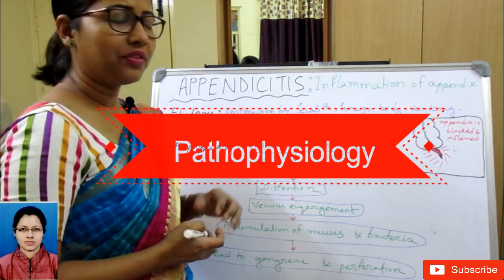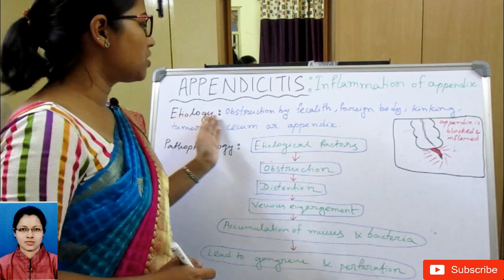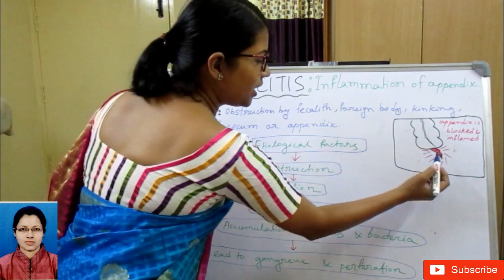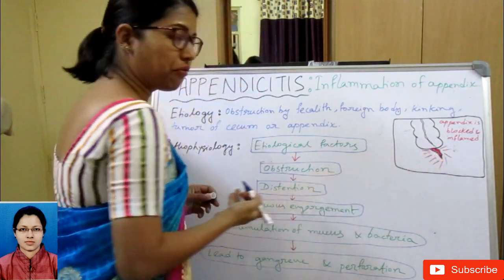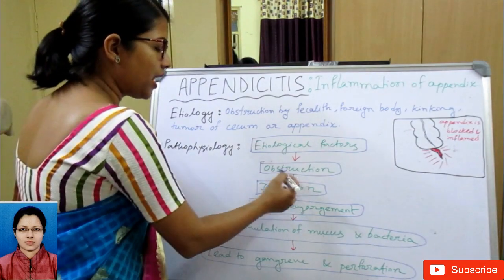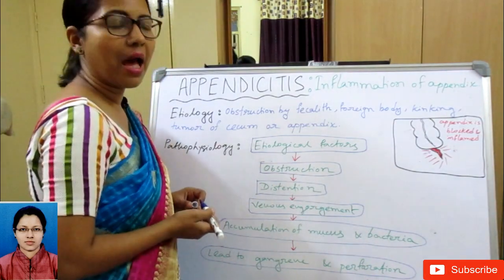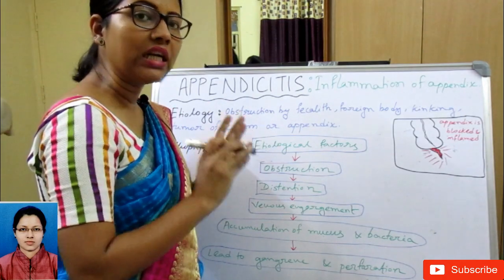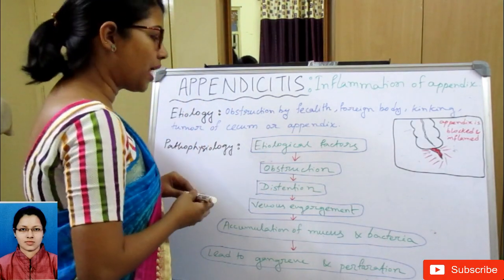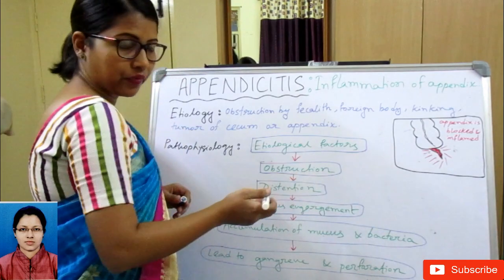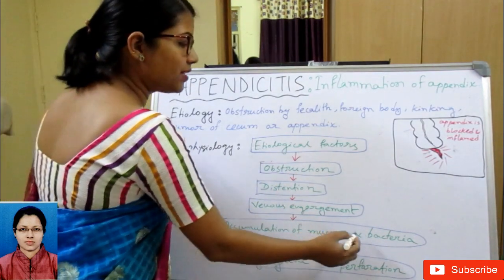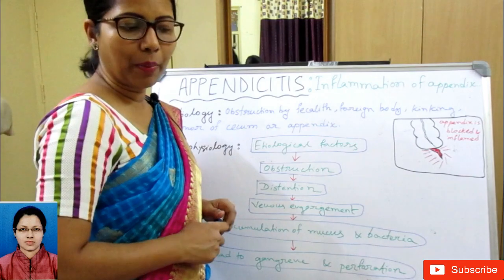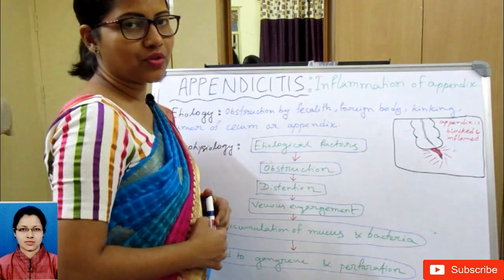In the pathophysiology, the etiological factors lead to obstruction in the appendix. When obstruction occurs, there is distension of the appendix — the normal and inflamed pictures are totally different. Then venous engorgement occurs, followed by accumulation of mucus and bacteria, which leads to gangrene and perforation. This is the pathophysiology of appendicitis.